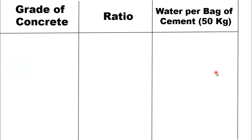In this video we will discuss the water requirements per bag of cement. We know that the weight of one bag of cement is 50 kilograms, and the volume of one bag of cement is 1.25 cubic feet. The first grade of concrete is M5.